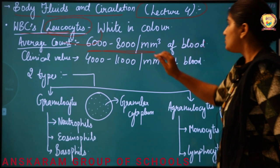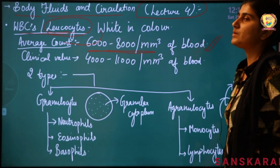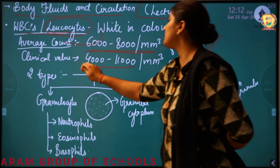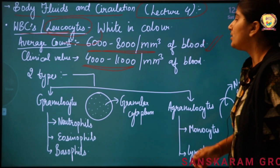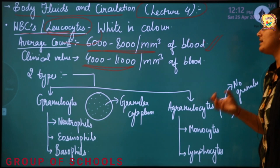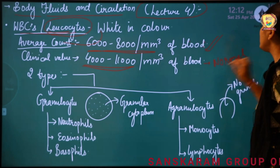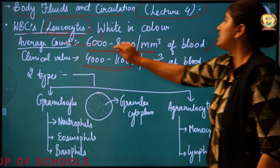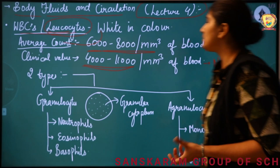The average count given in NCERT is 6,000 to 8,000 per mm³ of blood. But talking about clinical value — the TLC (Total Leukocyte Count) normal range is 4,000 to 11,000 per mm³ of blood. For NCERT, it is 6,000 to 8,000 per mm³.